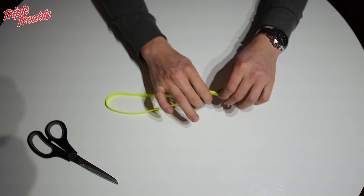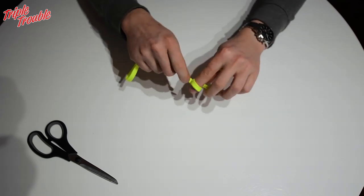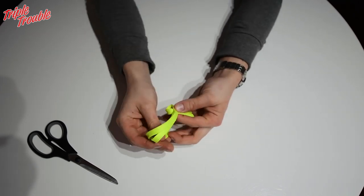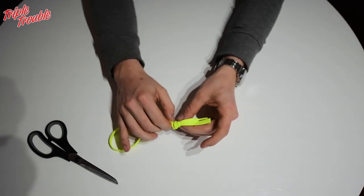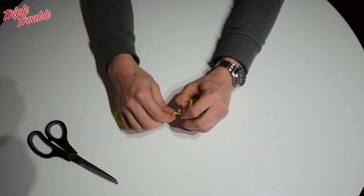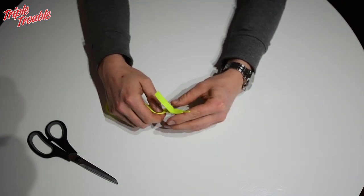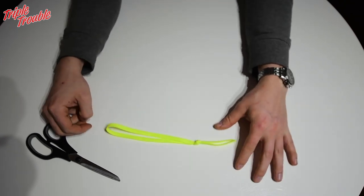Make a loop and put a simple overhand knot in it. Don't pull it tight just yet, so you can still adjust the size of the loop if necessary. Make sure that the knot is nice and evenly distributed.